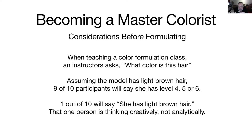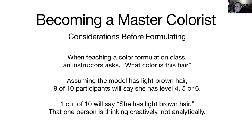When teaching a color class, most instructors ask what color is the hair. Assuming the model has light brown hair, nine out of ten participants say she has level four, five, or six hair because they've been taught to think in levels — and that's not right. The one person out of ten who says she has light brown hair is the one thinking creatively, not analytically, and almost always comes up with better color formulas.